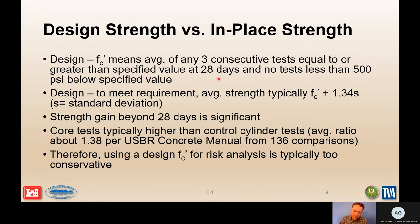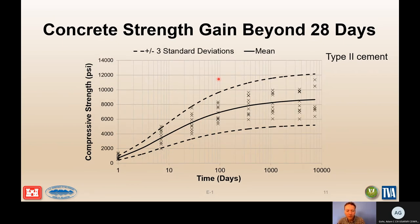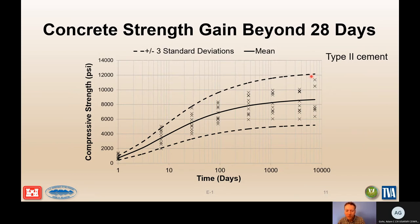To age concrete strength, there are published reports with aging curves for different types of cement — one for Type 4 cement, one for Type 2 cement — which can be used to age from 28 days or whatever was specified to the current age of the concrete. Be careful depending on your curing environment: these plots are from continuously moist-cured samples. If there's not water around for the hydration reaction to continue, you may get less strength gain. You may be at the high end if in a submerged environment, so you must consider the actual physical processes occurring.